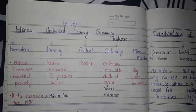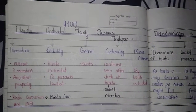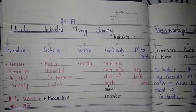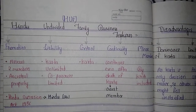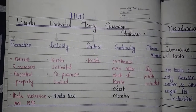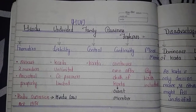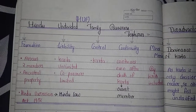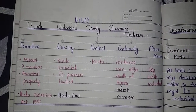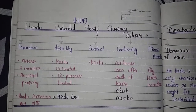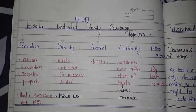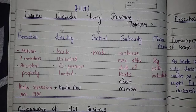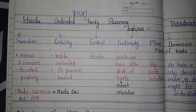We will talk about HUF, which means Hindu Undivided Family, also known as Joint Hindu Family. For the formation of HUF, at least two members are required from the same family, and they must have ancestral property — meaning purvajo ki zameen. It is governed by the Hindu Succession Act 1956, which is essentially Hindu law.